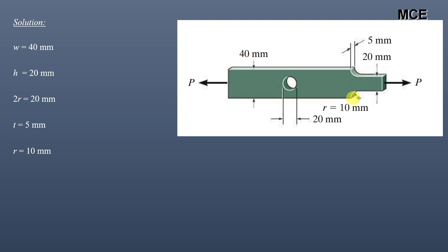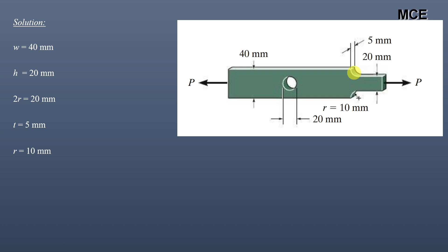The maximum stress in this bar will occur at the portion where the bar has minimum cross-sectional area. We can see from the figure that this bar has a minimum cross-sectional area either at the hole or at the fillet. These are the two portions where failure can occur if the load P exceeds the allowable load. We will take two cases: first assuming failure at the fillet, then assuming failure at the hole. The lower of the two resulting values will control the design.